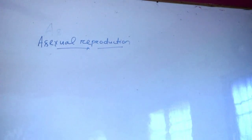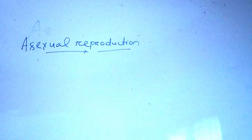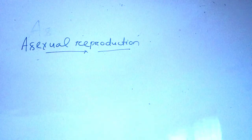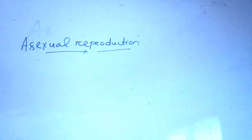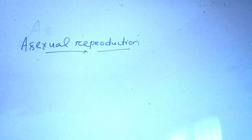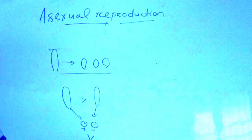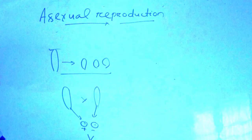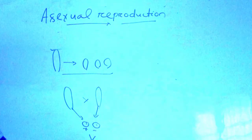Let us discuss the asexual reproduction of living organisms. Simply, we can say the process by which an organism produces individuals of its own type is called reproduction. The reproduction in which two parents are involved is called sexual reproduction, and the reproduction process involving only one parent is called asexual reproduction.